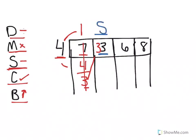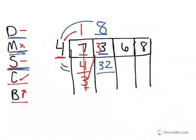8. So I divided. Now I multiply: 8 times 4 is 32. Now I subtract: 33 minus 32 equals 1. I check — my 1 is smaller than 4. Now I can bring that up.